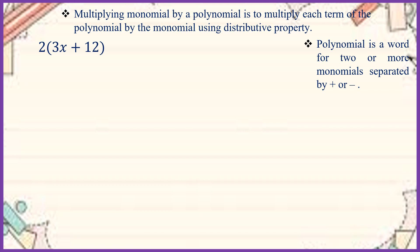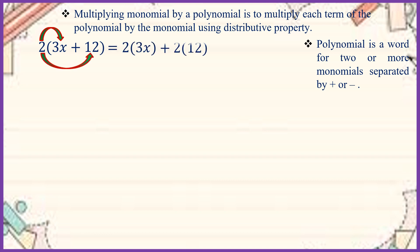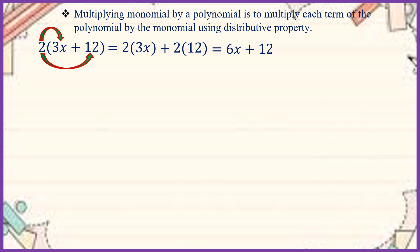Supposing we have 2 times the quantity 3x plus 12. We are going to distribute 2 inside the parenthesis. So we will be getting 2 times 3x plus 2 times 12. Simplifying further, we get 6x plus 24.